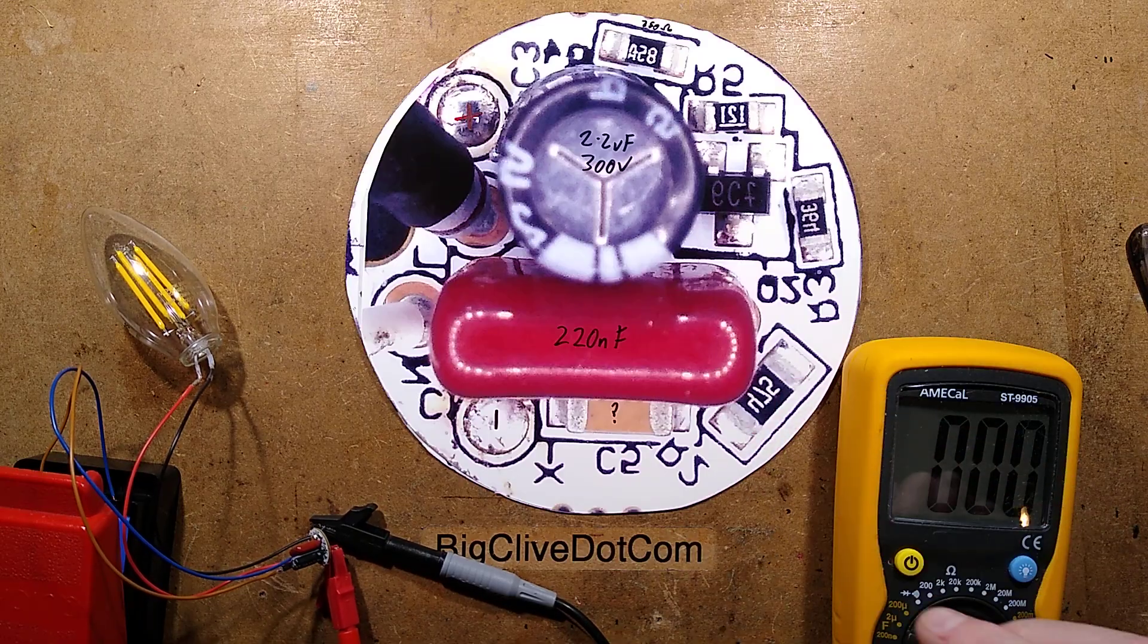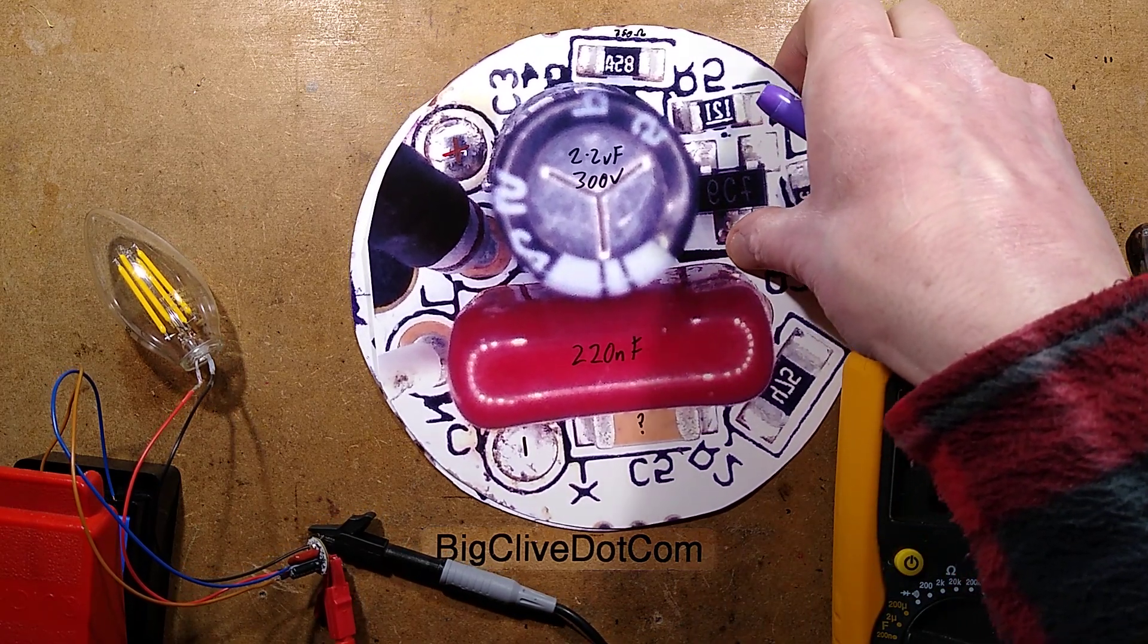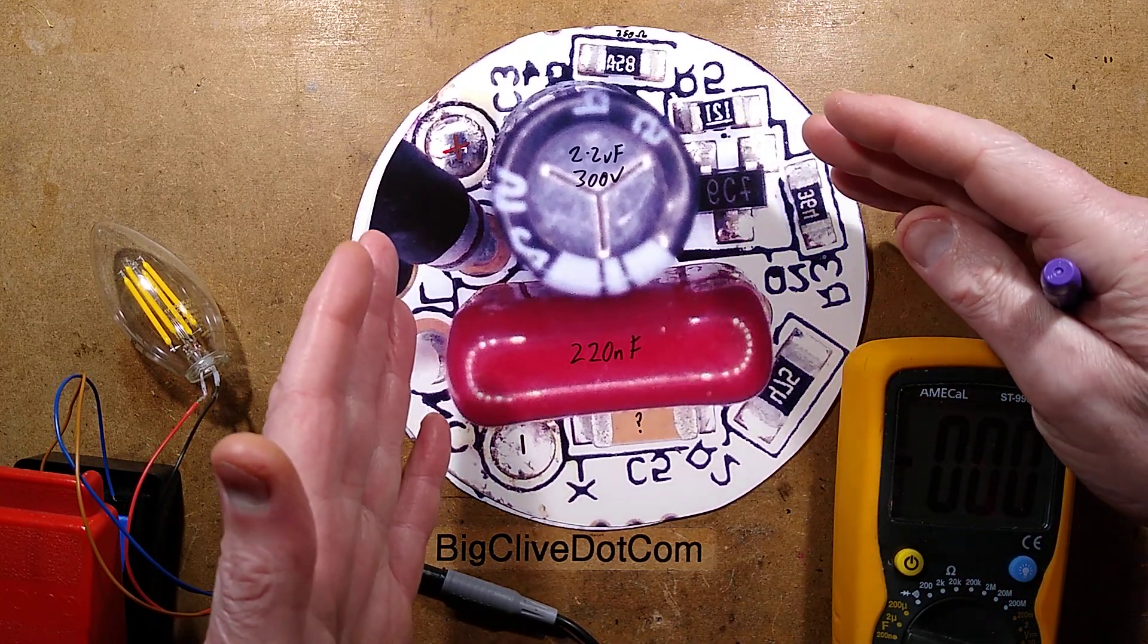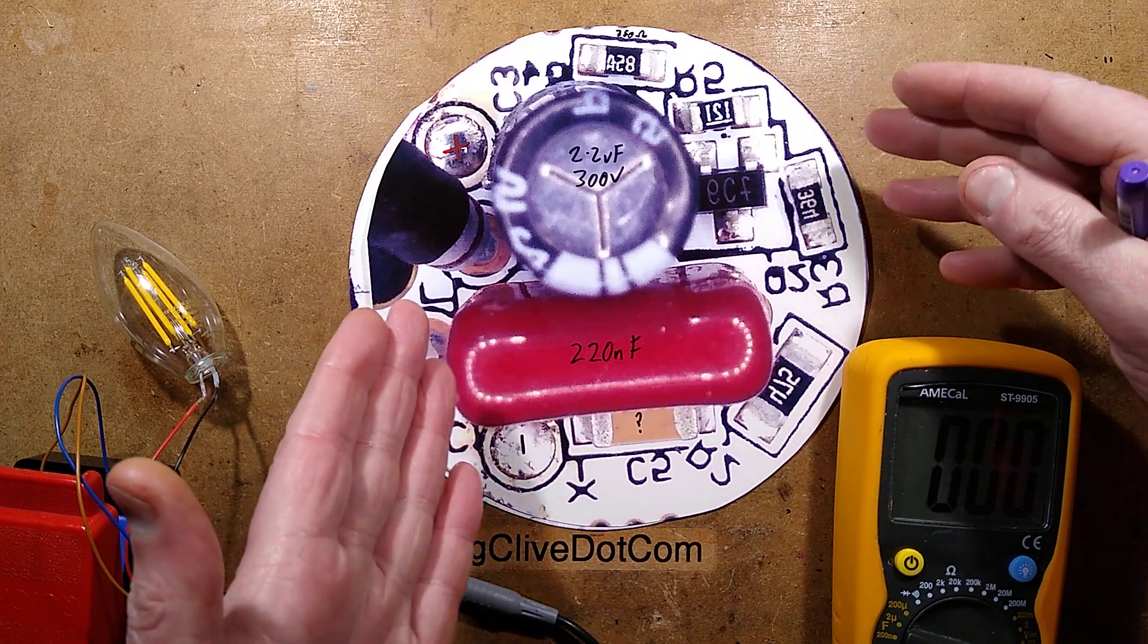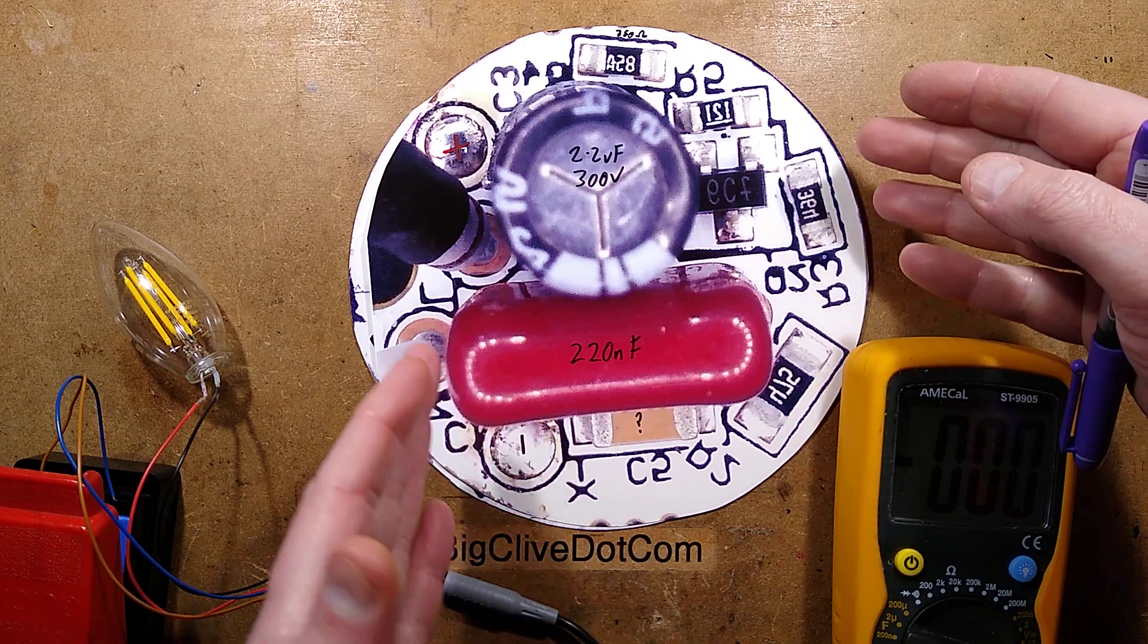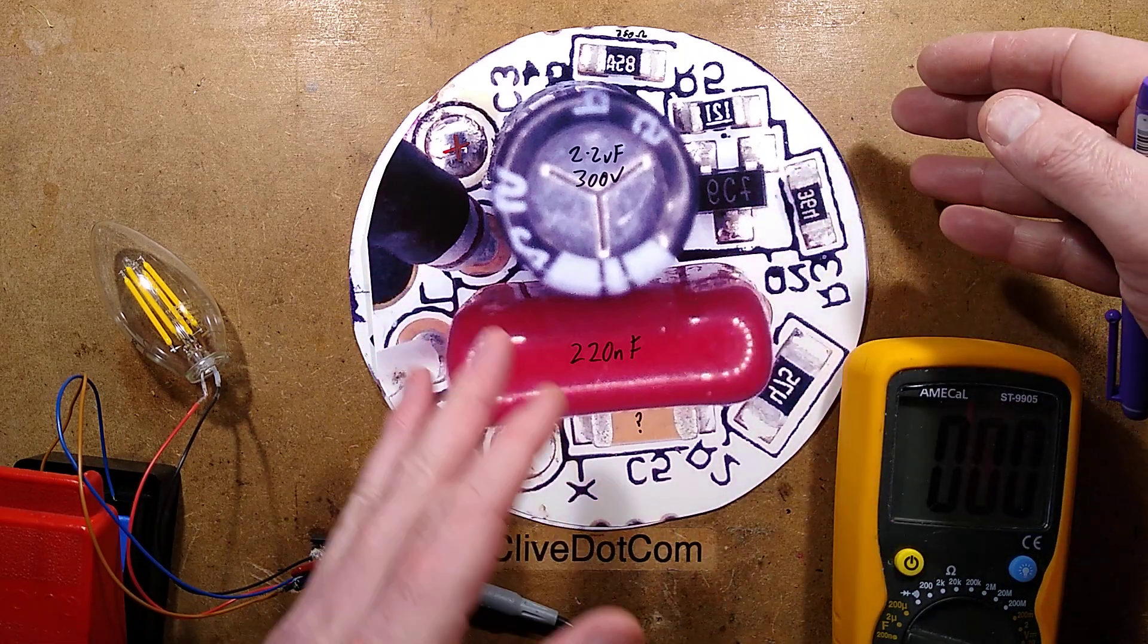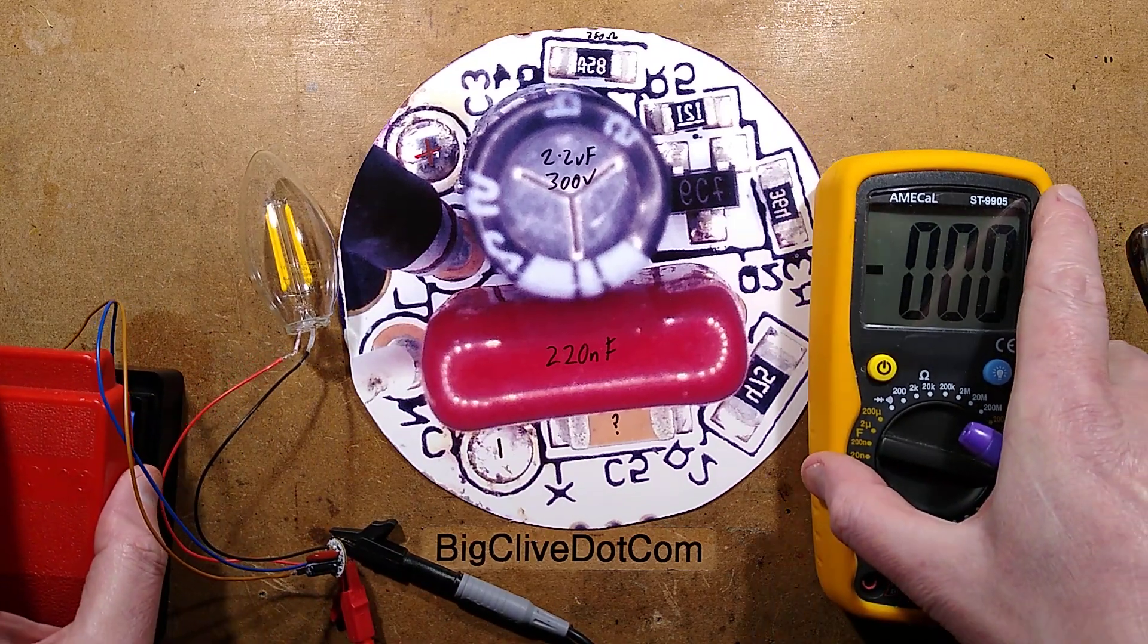The reverse engineering is complete and I have to say it's very surprising. They've basically taken the circuitry out of the 3-watt lamp—I guess it's standard across the range—and they've miniaturized it to fit into the 1-watt lamp.